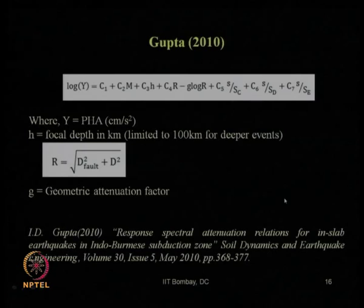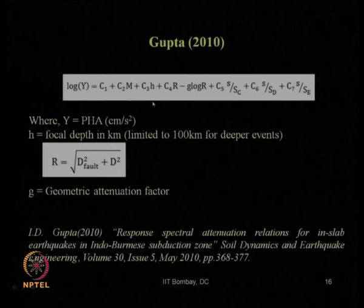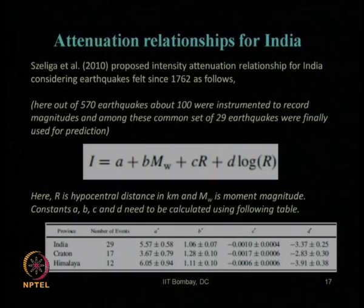Gupta in 2010 proposed an attenuation relationship for PHA using an empirical relationship where H is the focal depth and G is the geometric attenuation factor, applicable to the Indo-Burmese subduction zone for intra-slab earthquake events.